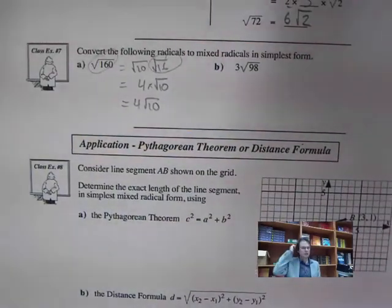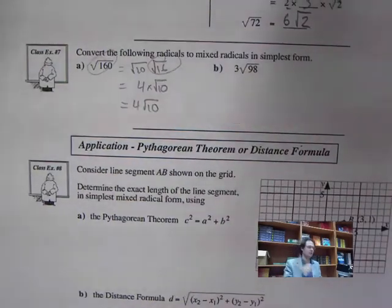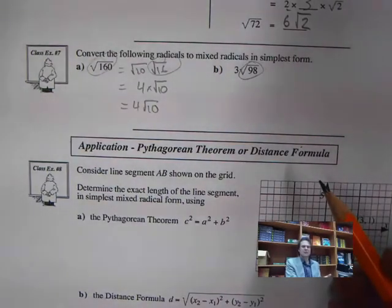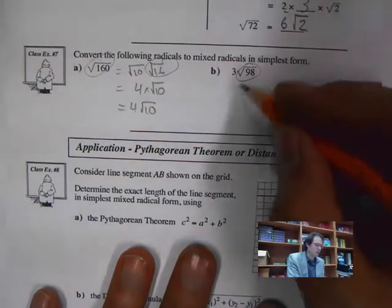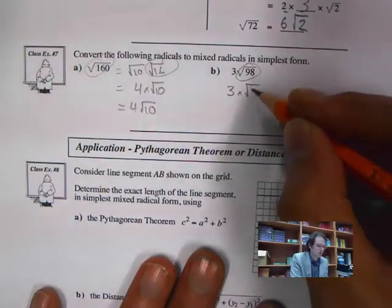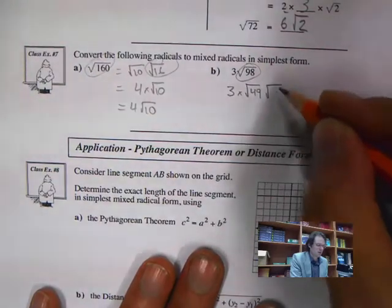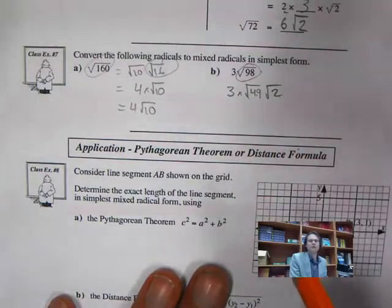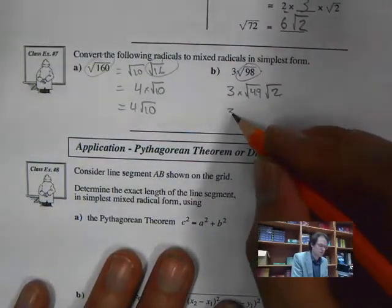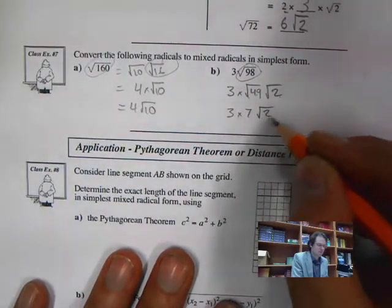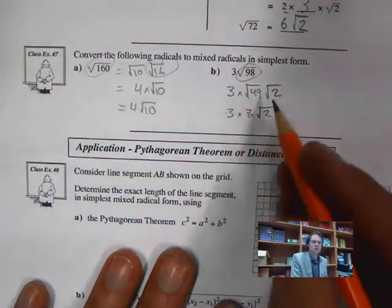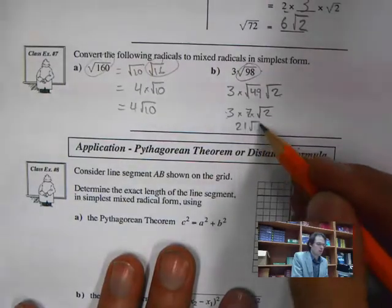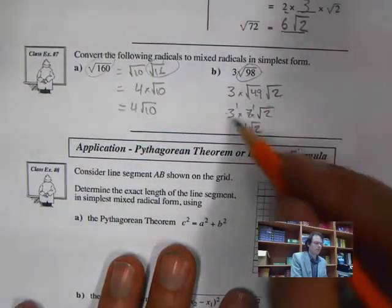Now 3 root 98 — this can be simplified further. 98 equals 49 times 2, so we have 3 times root 49 times root 2. The square root of 49 is 7. Then we multiply the whole numbers together — because they share the same exponent — giving 21 root 2.